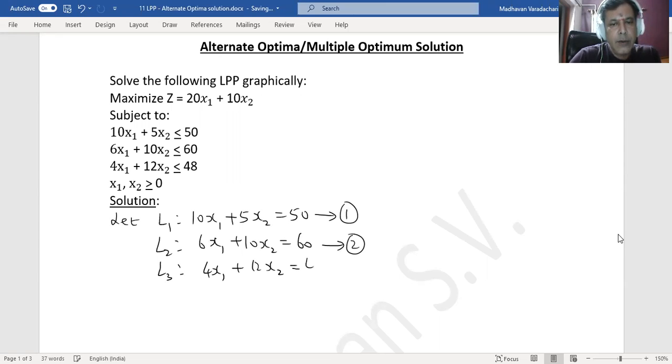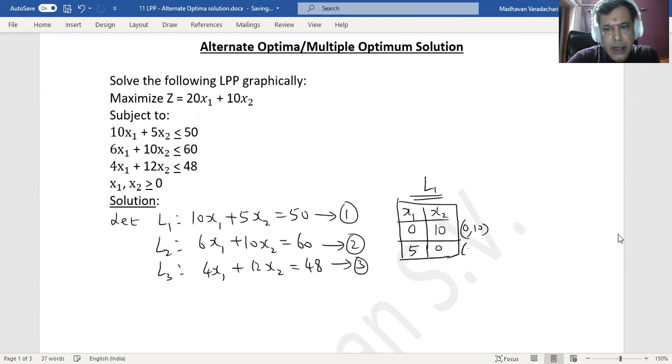Now let us find out the coordinates for each of the lines. First choosing L₁, substituting x₁ for 0, the first term will become 0, then we have 5x₂ equal to 50 which means x₂ will be 10. Then substituting x₂ for 0, second term will become 0, 10x₁ equal to 50 means x₁ will be 5. So for the first line the coordinates are (0,10) and (5,0).